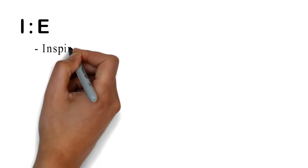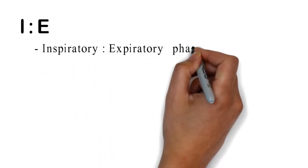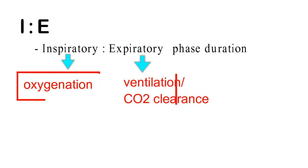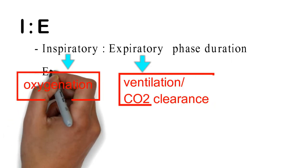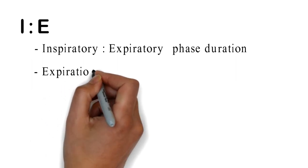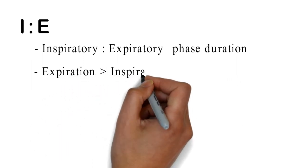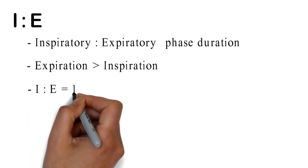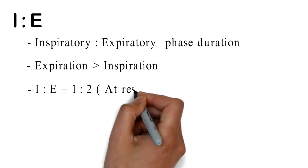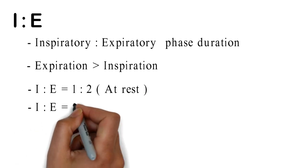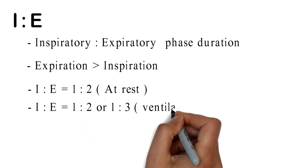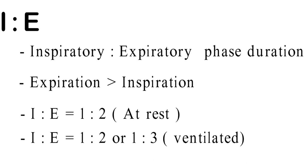IE ratio is the ratio of duration of inspiratory phase to expiratory phase. Inspiration helps in oxygenation whereas expiration helps in CO2 clearance or ventilation. Normally expiration is longer than inspiration. At rest, inspiration to expiration duration is 1 to 2. We can set I to E from 1 to 2 to 1 to 3 for a ventilated patient.